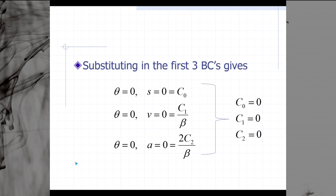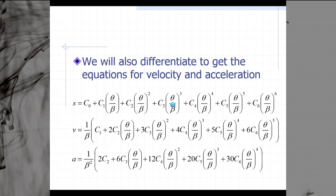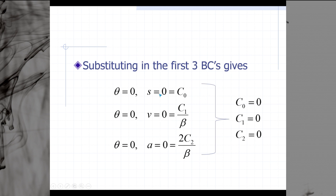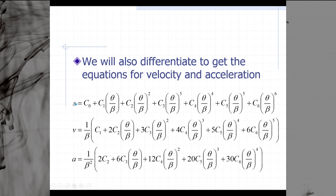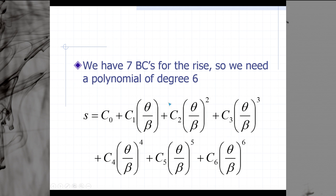Now it's time to substitute in for the first three boundary conditions that we had in our table. We had s equals 0, v equals 0, and a equals 0, all when theta is equal to 0. When theta is equal to 0, our s is equal to 0. If we go back to the s equation and we plug in 0 for s and also 0 for theta, we'll lose c1, c2, c3, c4, c5, and c6 because each of them is a function of theta, and we're setting theta equal to 0 at the start. That means that we found that c0 is equal to 0. So right away if we plug in 0 for all of our thetas, then we know that c0 is also going to be equal to 0.